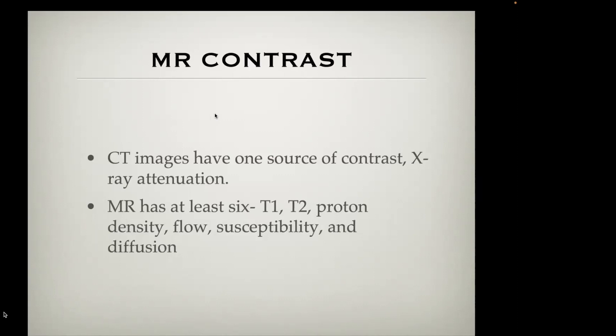Contrasting CT imaging with MR imaging: when you look at a CT scan, you're really looking at only one source of contrast, which is X-ray attenuation. Areas with high X-ray attenuation such as the skull look different than areas of low X-ray attenuation such as fat and fluid in the ventricles — it's a linear source of contrast. MR imaging has at least six sources of contrast, including T1 weight and T1 contrast between tissues.